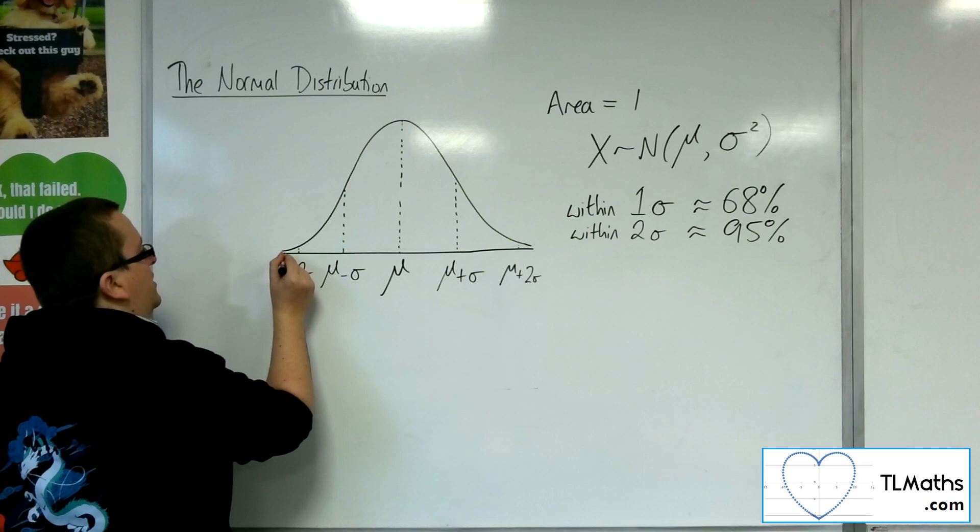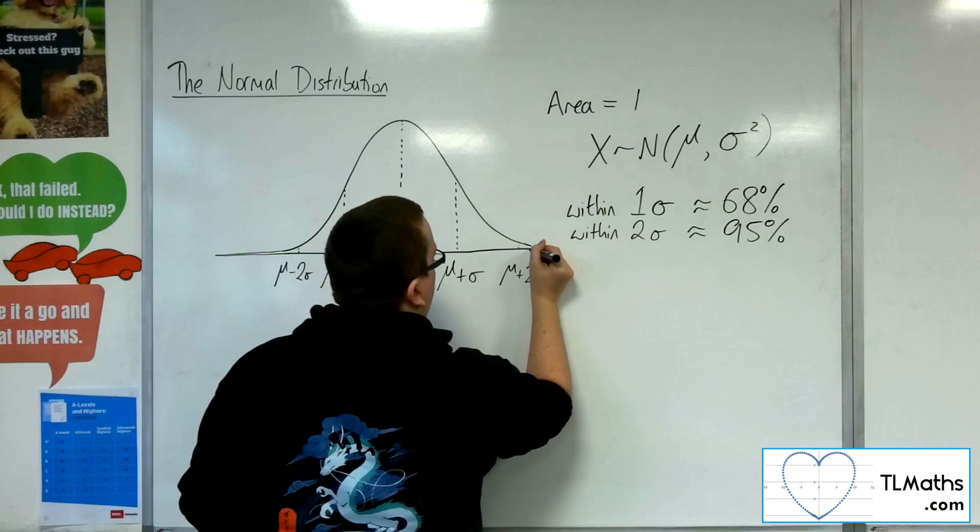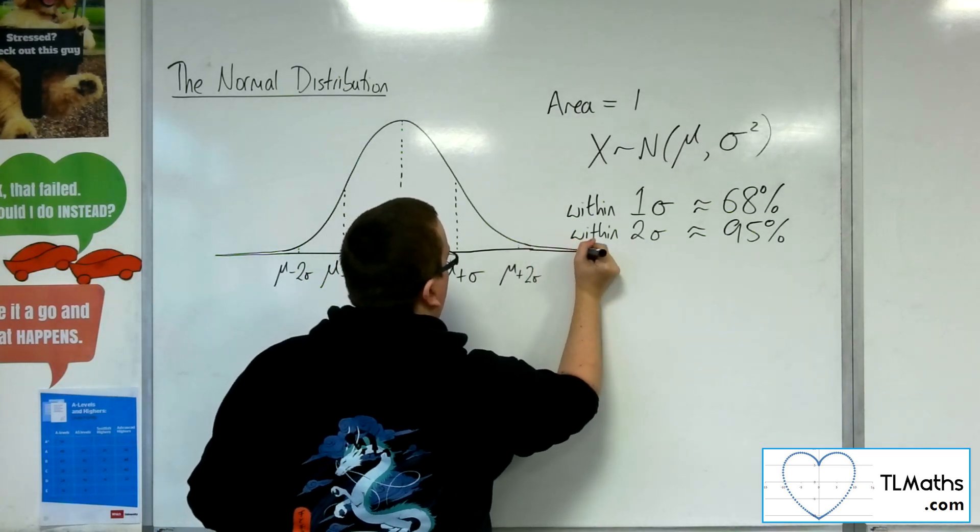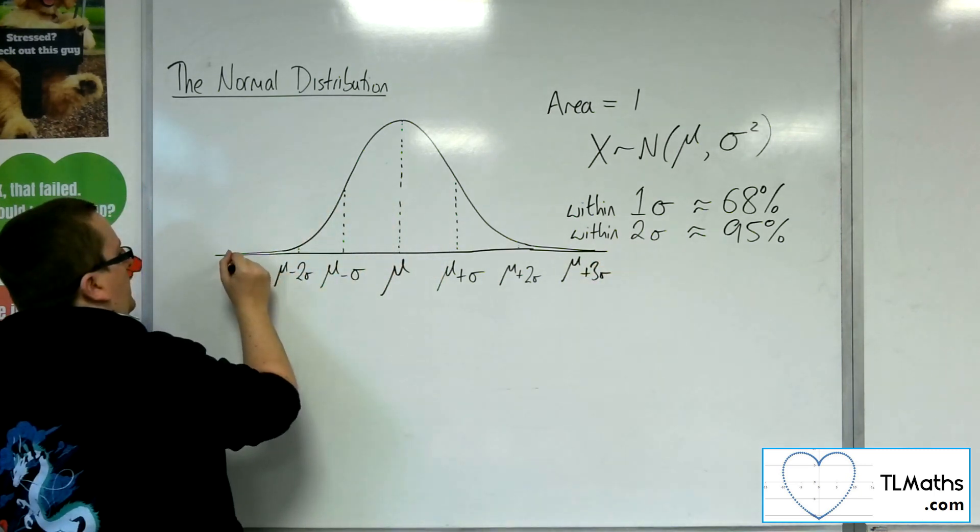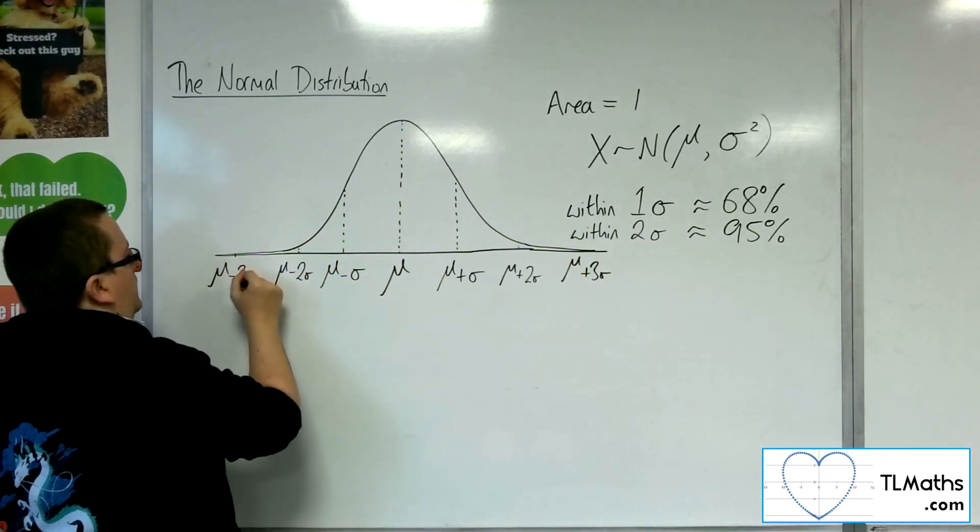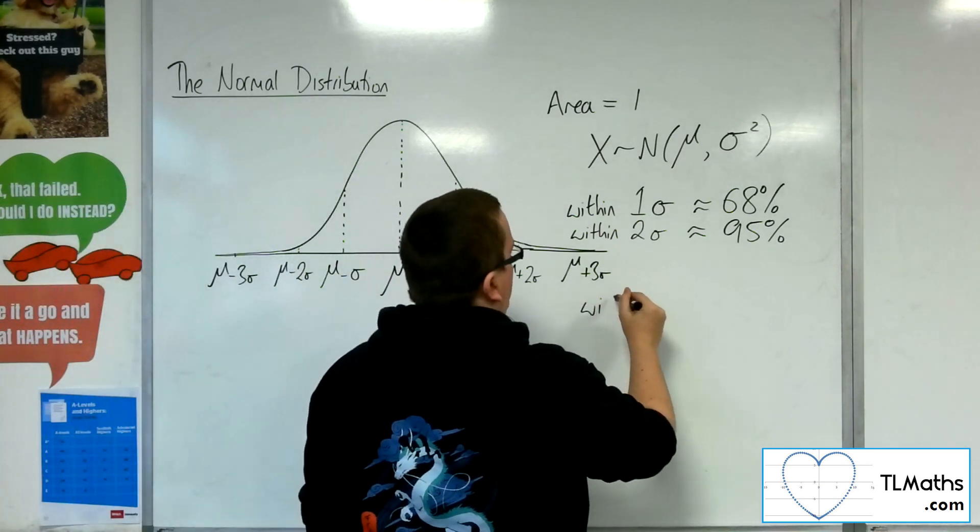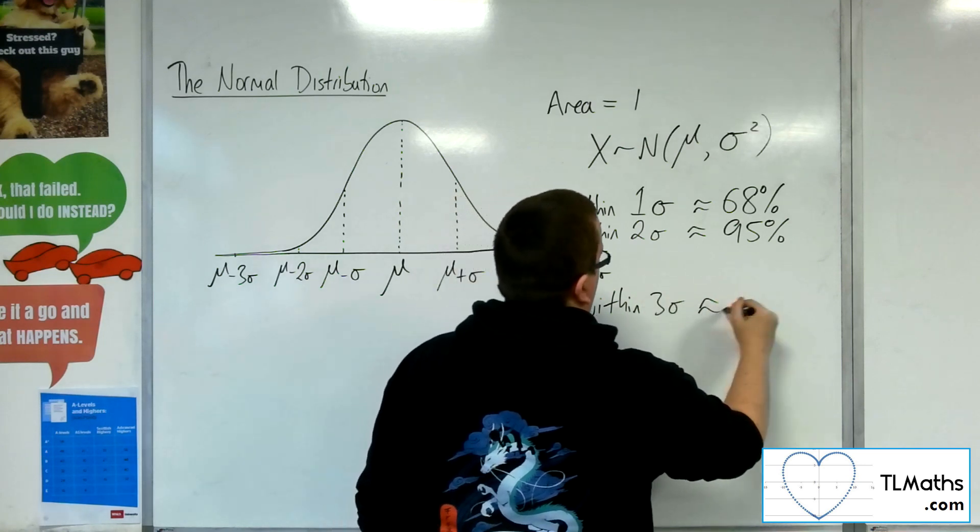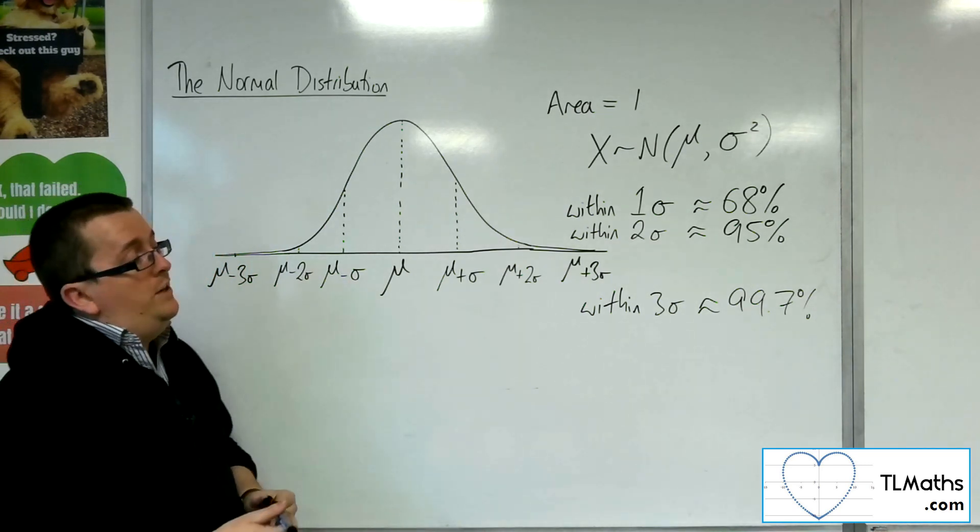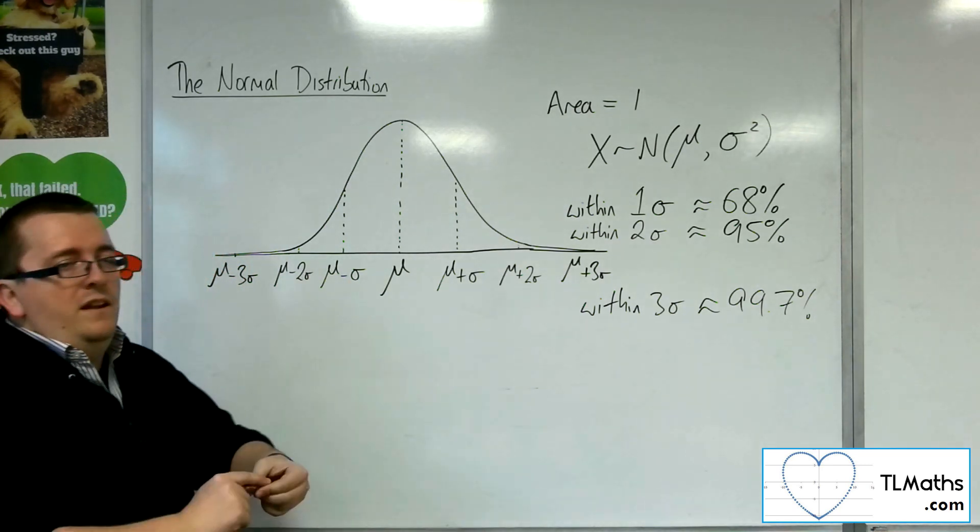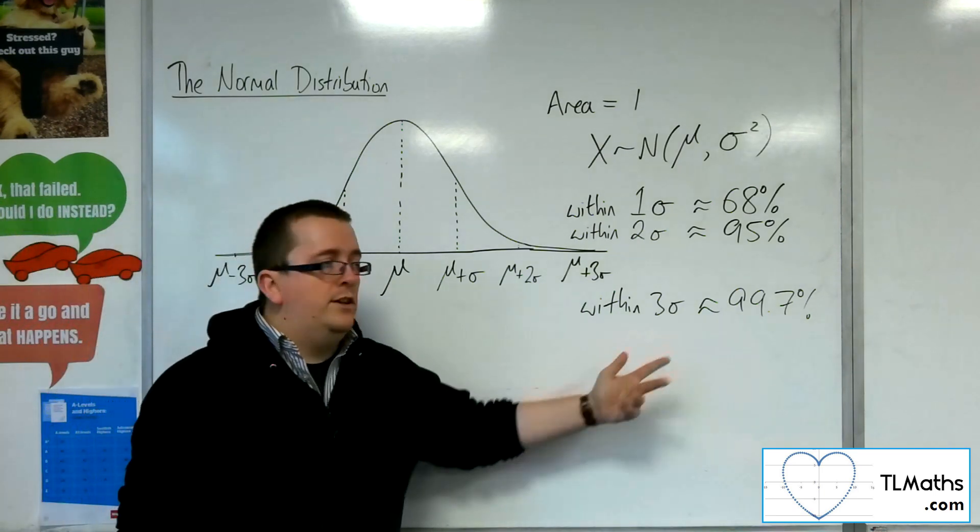Okay, so by the time you get to three, so if I continue drawing this, we'll say three is there. So three standard deviations, we're talking about 99.7%, I think it is. So if you go to four standard deviations, then you're 99.99%, okay, but we say that the majority of the data is within three standard deviations of the mean.